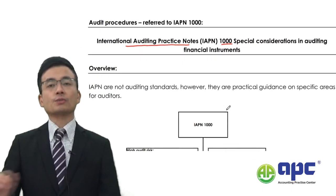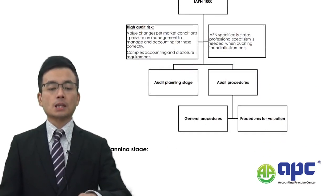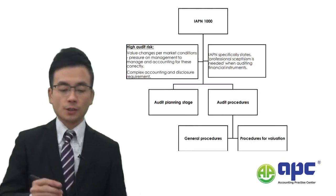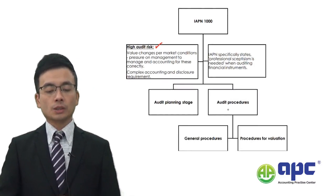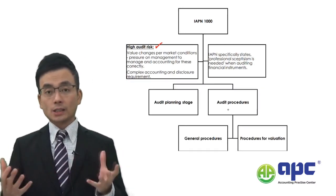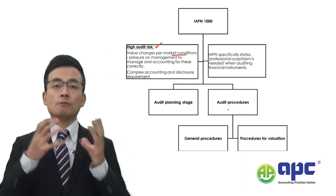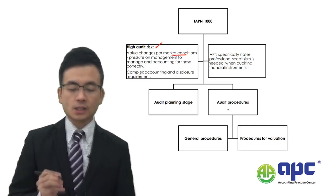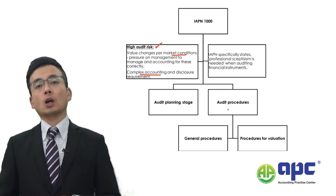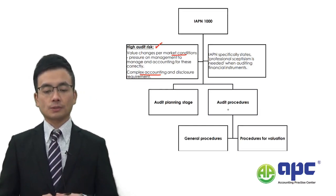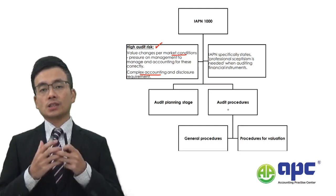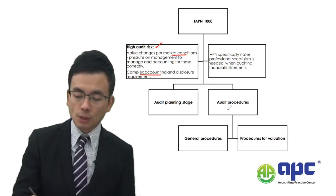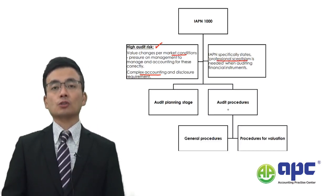Now for audit procedures related to financial instruments, covered under IAPN 1000 in the syllabus. From the auditor's point of view, most financial instruments are high audit risk areas because market conditions change, the value of financial instruments changes, putting pressure on management to make the profit figure look better. There are also very complicated accounting and disclosure requirements under IFRS 7, covering significance of risk as well as qualitative and quantitative information. Therefore, we need to maintain professional scepticism throughout when auditing financial instruments.